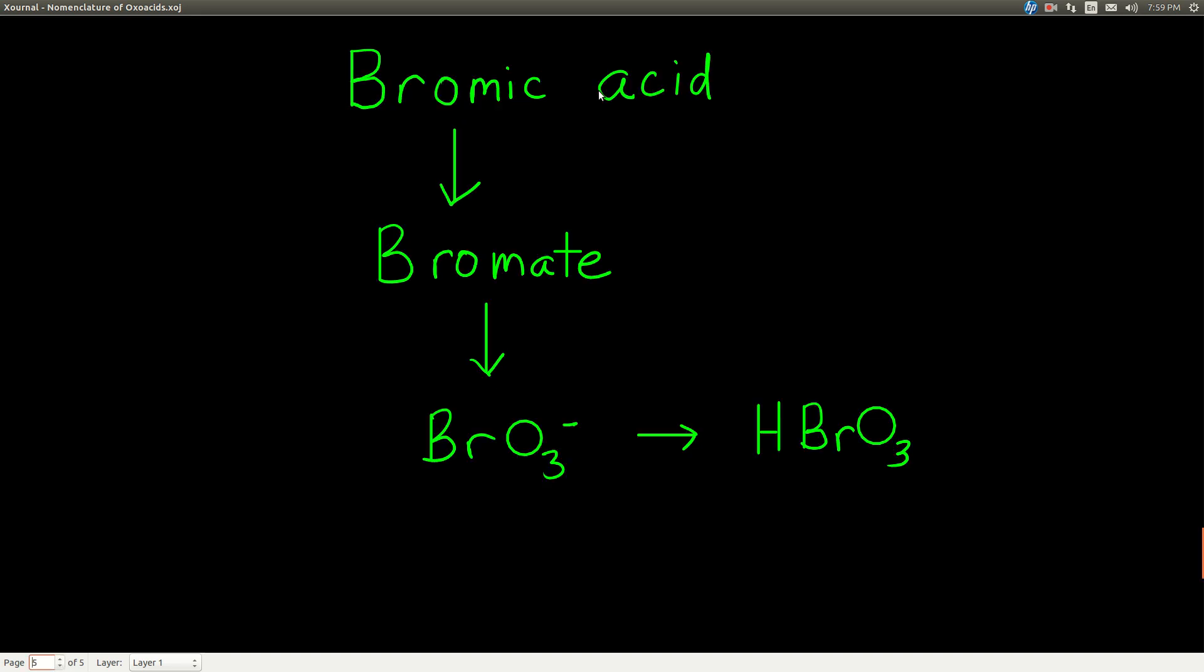Now, if we're going the other way, going from the name to the formula, we look at the word acid, so we know it's an acid. This ends in ic, so we change the ic back to ate and it becomes bromate. And again, this is where it's really useful to know your polyatomic ions. This is one of those eight other polyatomic ions I showed you before. Bromate, it ends up as the name for BrO3 with a negative 1 charge.